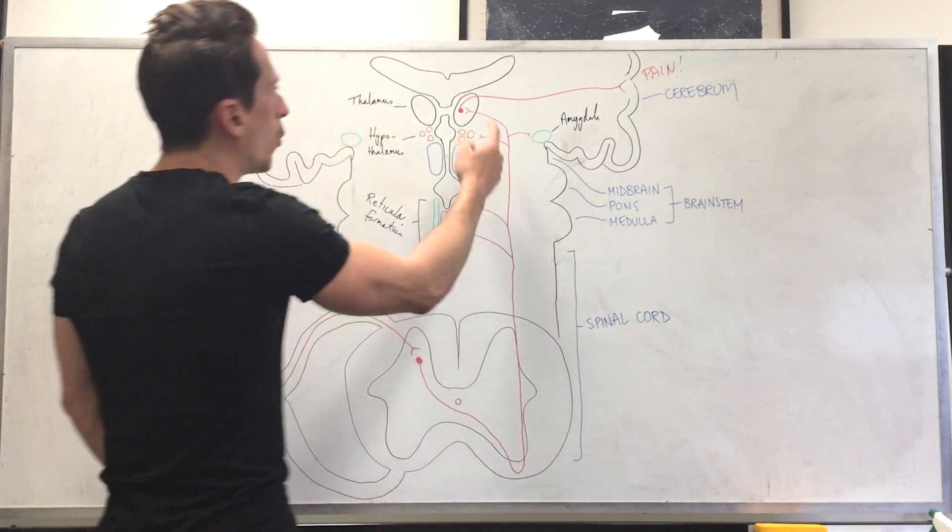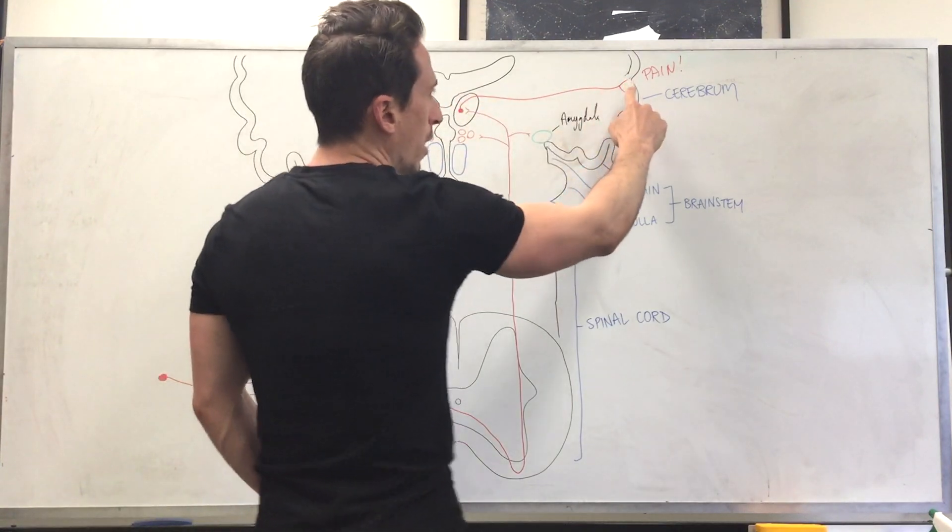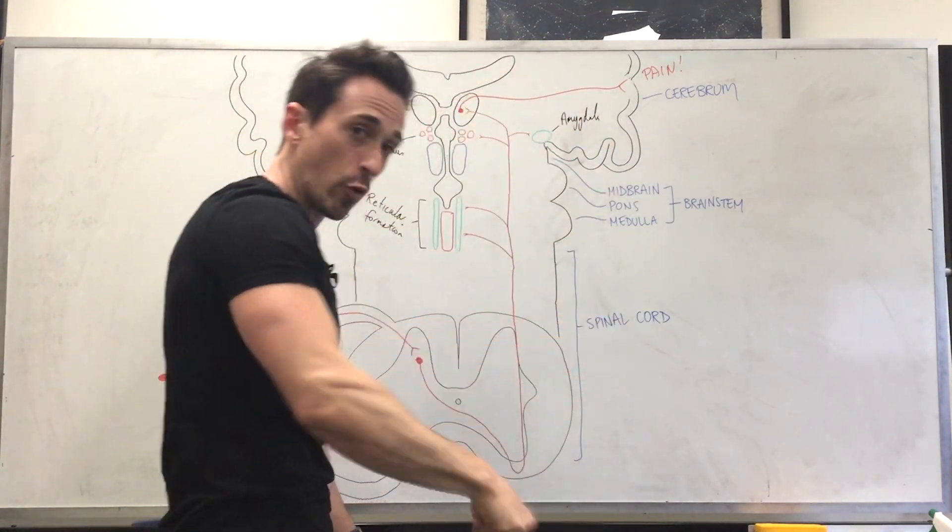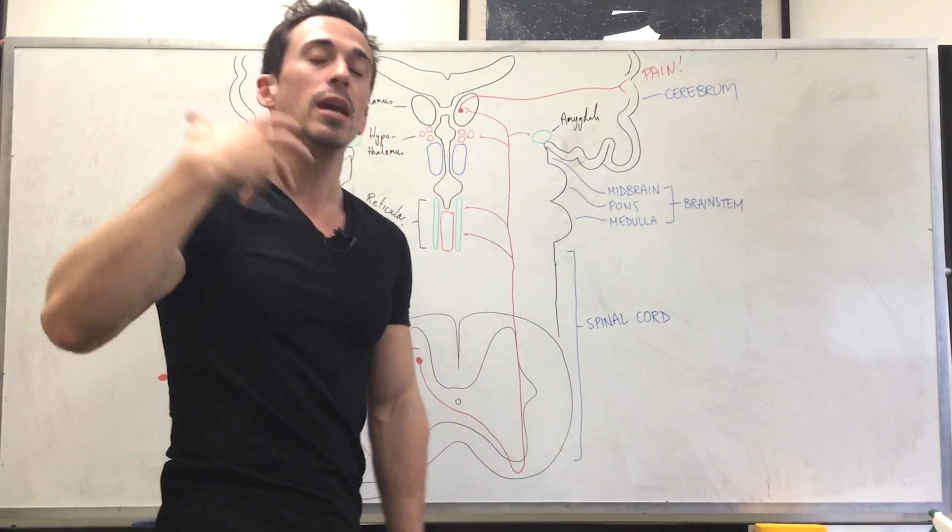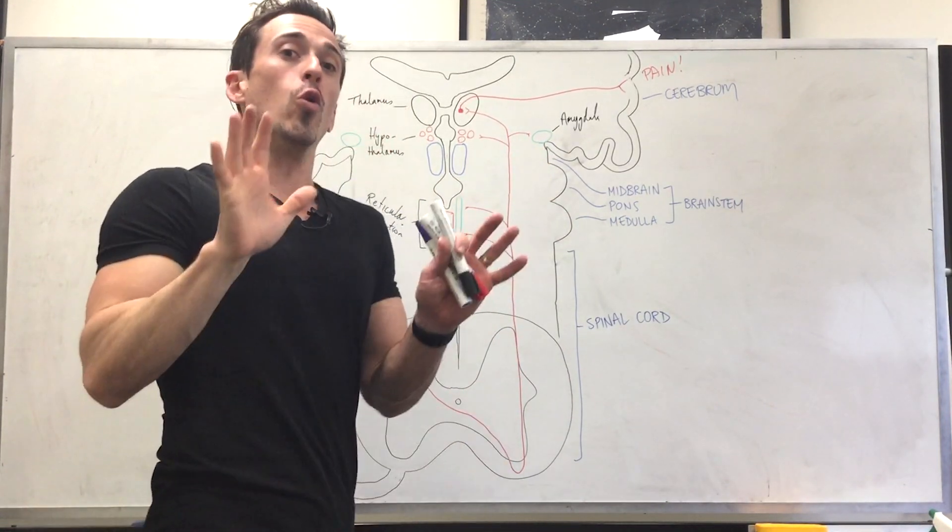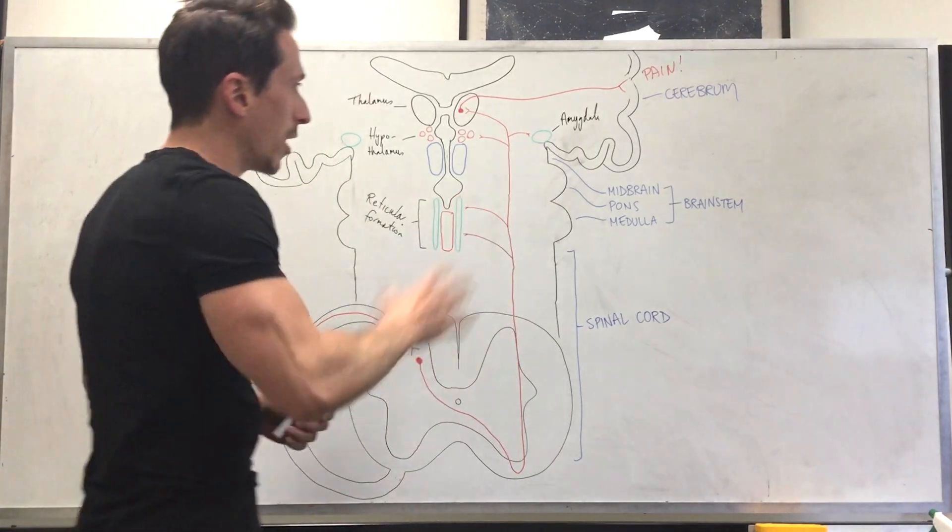Also going to go to the thalamus to be sorted, to go to the part of the brain that deals with conscious awareness for that foot. Also sends a signal to the amygdala. This is going to be that of emotion. Oh, I don't want to experience this pain ever again, let's avoid it. All right.